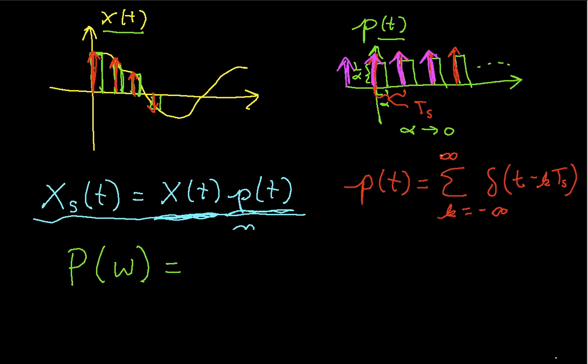Because it's periodic, it has a Fourier series expansion. And that Fourier series expansion, or in that Fourier series expansion, the fundamental frequency, omega 0, is 2 pi over t sub s. And each of the Fourier series coefficients is equal to 1 over t sub s.